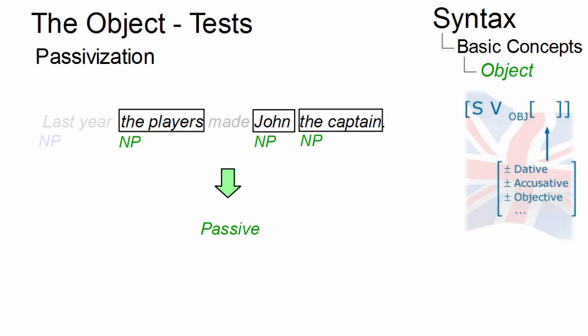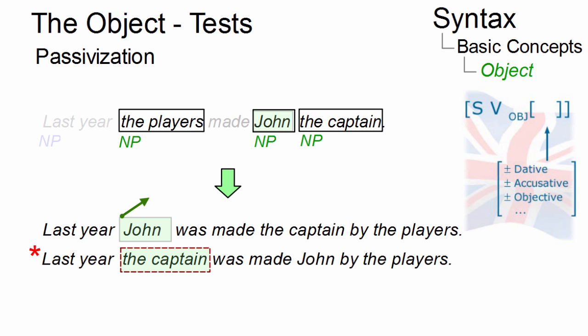A second test turns clauses with a transitive verb into the passive. There, the noun phrase which can become the subject in the passive is the object of the corresponding active clause.